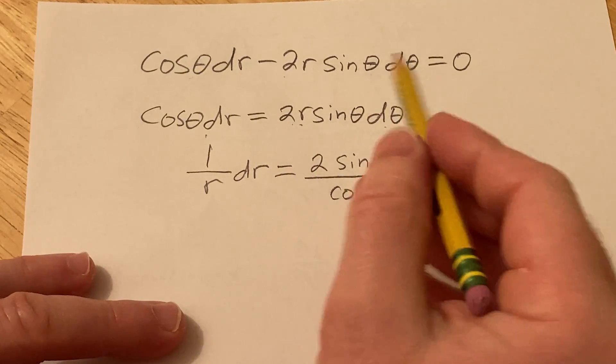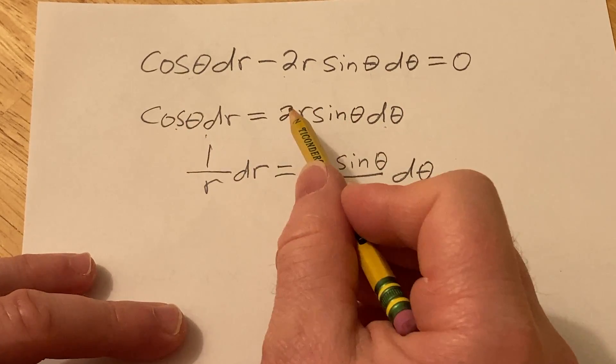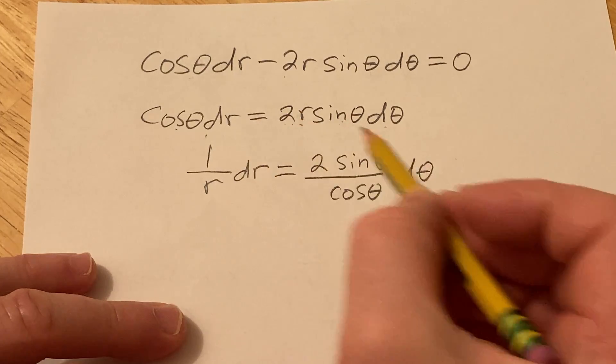Let's go over that again and make sure I did it right. We divide by cosine, and the 2 and sine stay, then divide by r.